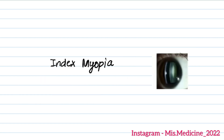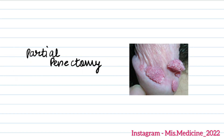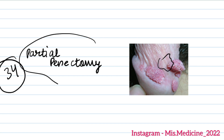Question 33 was index myopia. Question 34 had an option about a ward-like structure, and the question was about what treatment would be done when we remove the skin to show something — the answer was partial pinnectomy.